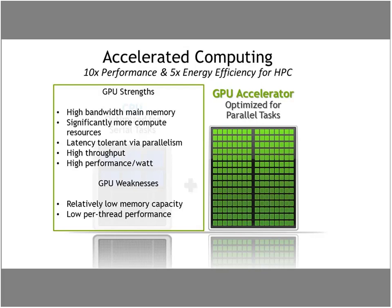Looking at GPUs: GPUs have extremely high bandwidth main memory. On a Tesla P100, our current top-of-the-line board, you're looking at over 700 gigabytes per second of main memory bandwidth. We also have significantly more compute resources — all of the space that the CPU reserved for caches and control logic, we're able to dedicate to compute resources on the GPU.